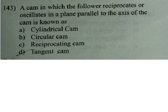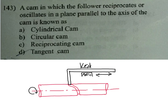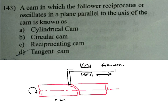A cam in which the follower reciprocates or oscillates in a plane parallel to the axis of the cam is known as: here in this figure, this is the follower — it is reciprocating — and this is the cam; cam is rotating. The plane is parallel to the axis of the cam. So, cylindrical cam — A is the answer.